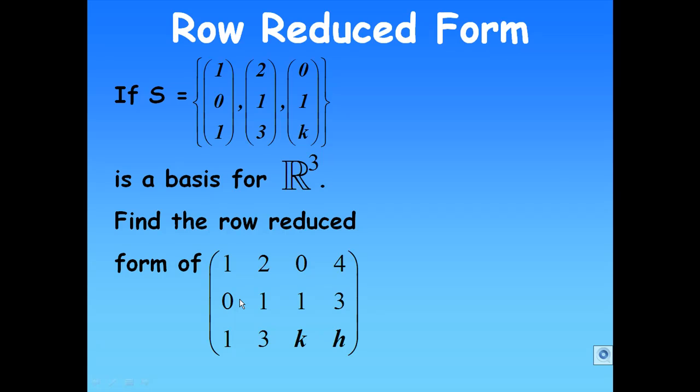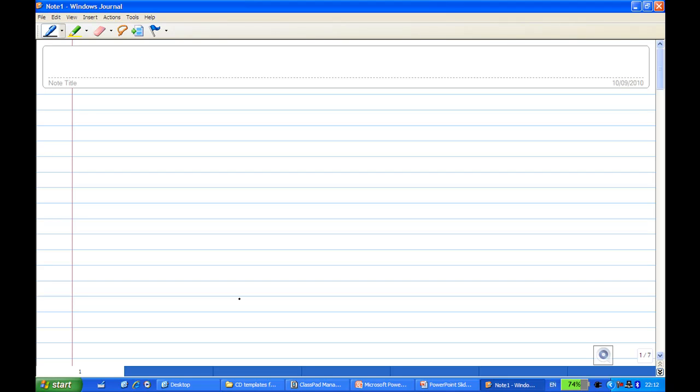Let's look at how I do this calculation by hand. First, we write down the matrix in augmented form: (1, 2, 0, 4) in the first row, (0, 1, 1, 3) in the second row, (1, 3, k, h) in the third row.